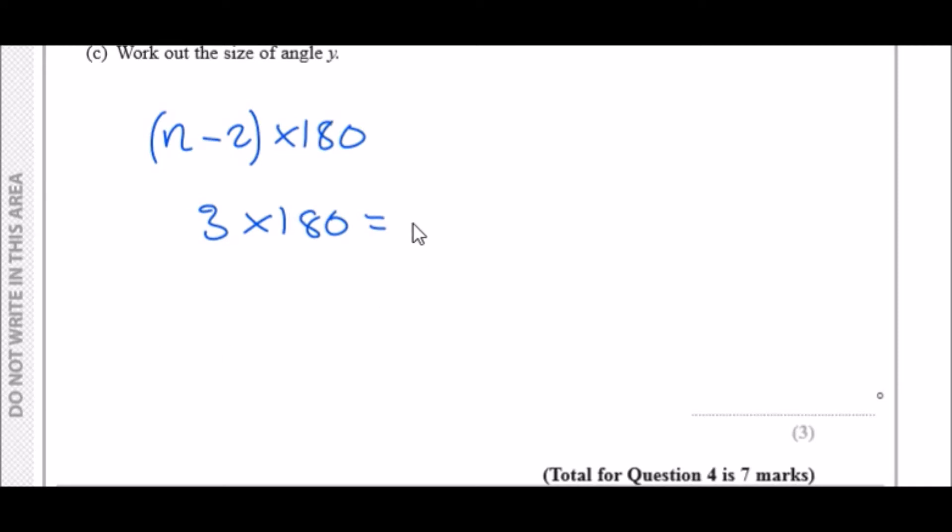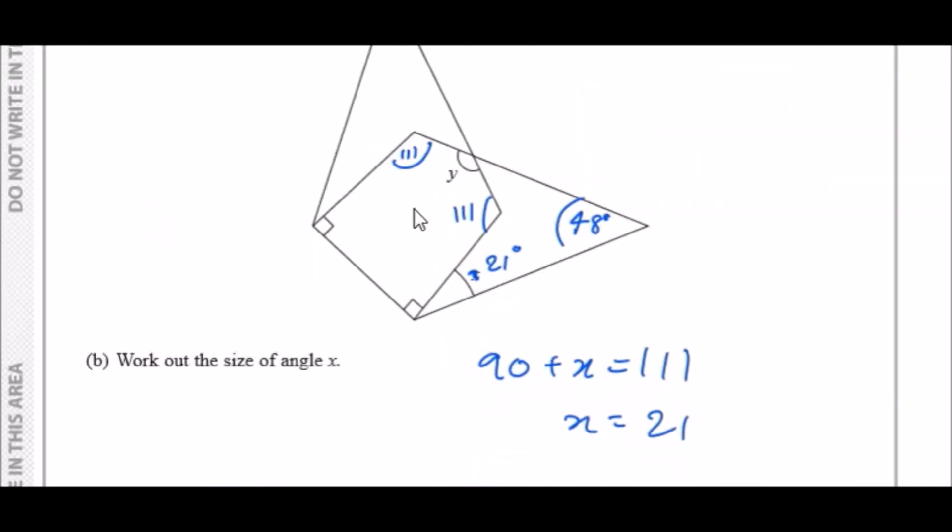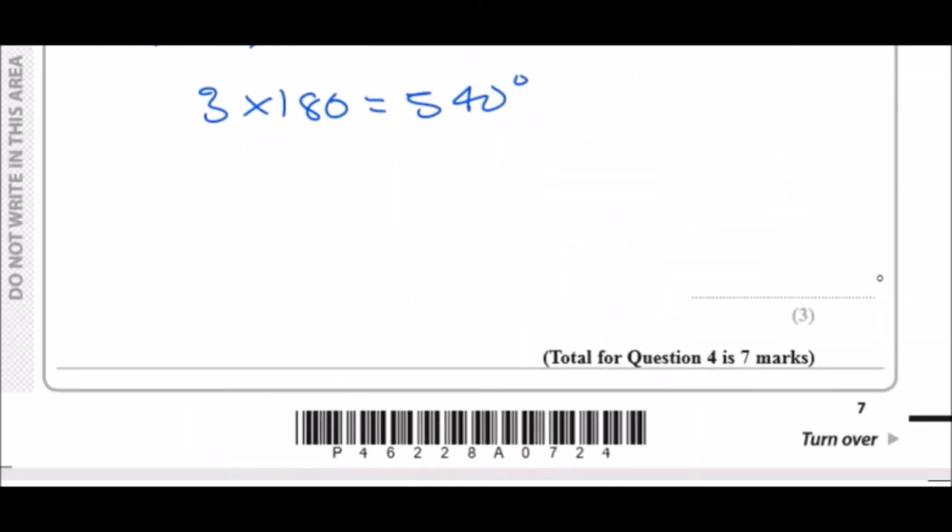We can just subtract it from 540. So we've got two 90s and two 111s plus y equals 540. So you've got two times 90 plus two times 111 plus y equals 540 degrees.